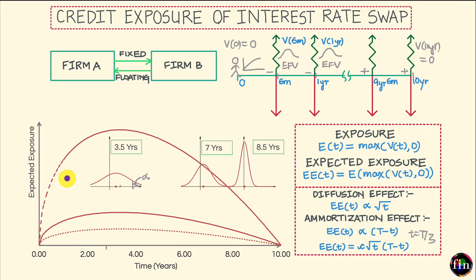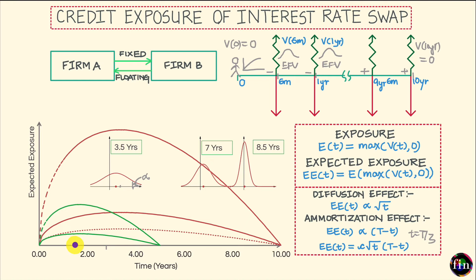Before I stop, let me show you how the EE and PFE will look for a shorter-dated swap — for example, a swap with a maturity of five years. For shorter-dated swaps, the credit risk exposure is smaller compared to longer-dated swaps. The shape is qualitatively the same — a humped structure — and the peak happens at one third of the life of the swap, which in this case is 1.67 years. This video was about understanding the credit risk exposure of interest rate swaps, reasoning out how the time profiles for expected future value, expected exposure, and potential future exposure will look.